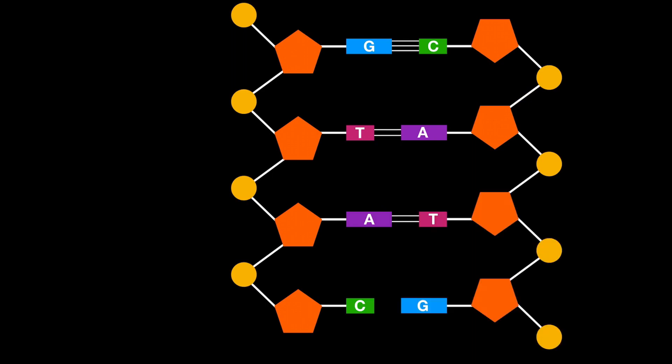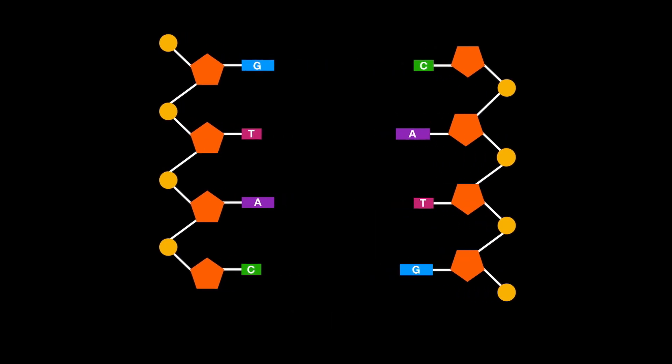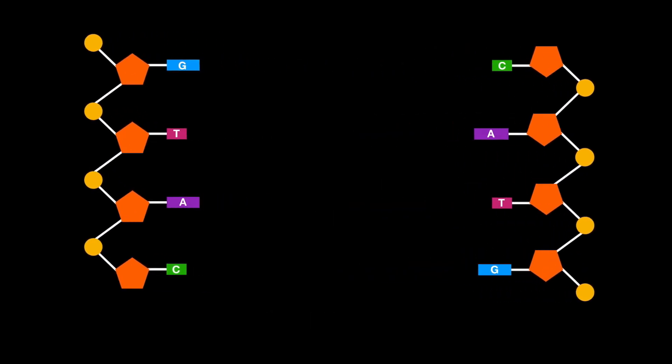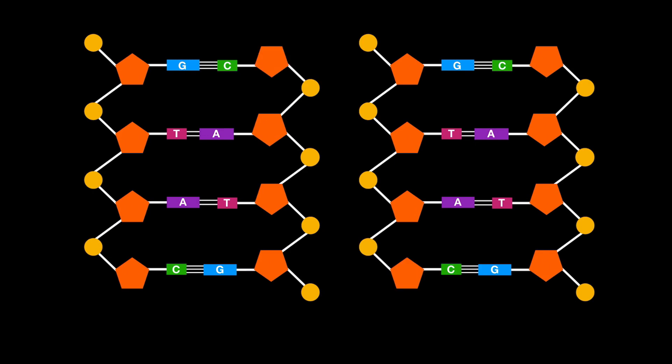Complementary base pairing allows for an exact copy of DNA to be created during DNA replication. In that process, the parental strands of the original piece of DNA are first separated. Complementary base pairing then takes place to add the complementary base to the parental strand, forming a new strand of DNA. When this is done on both of the parental strands, you end up now with two pieces of DNA.